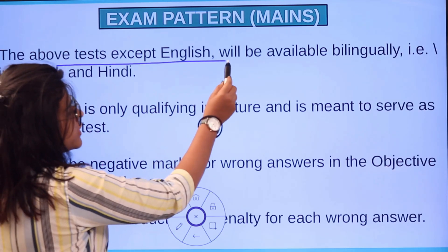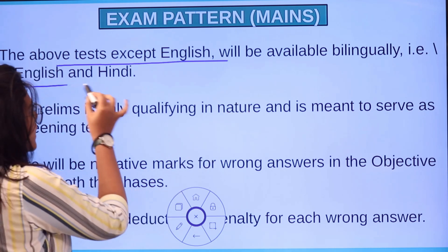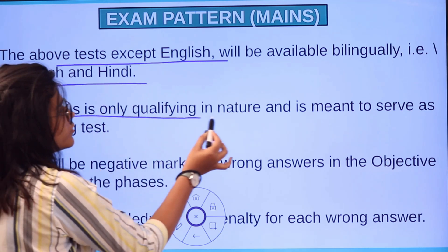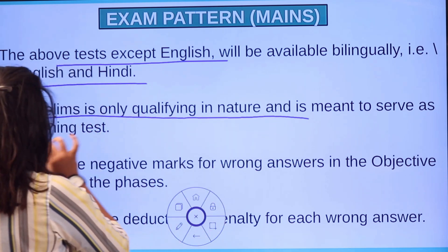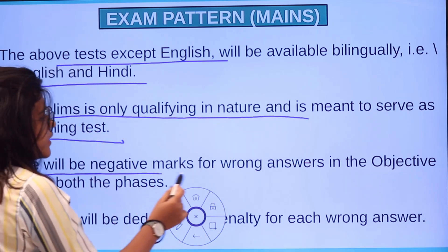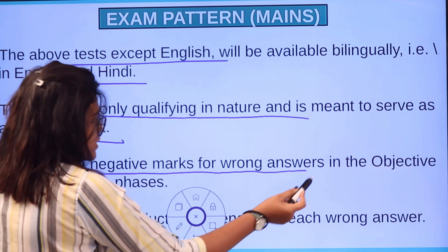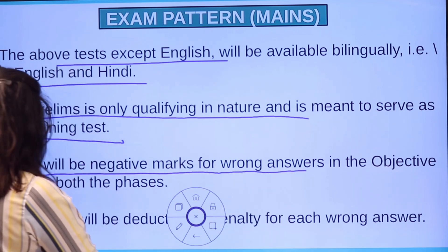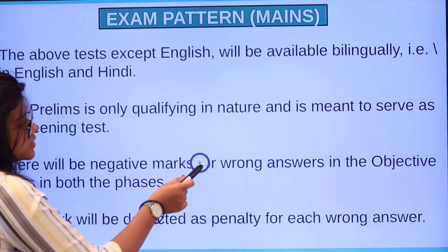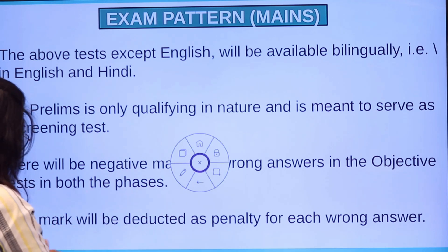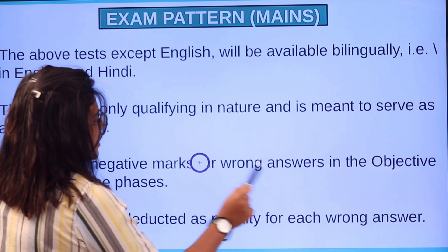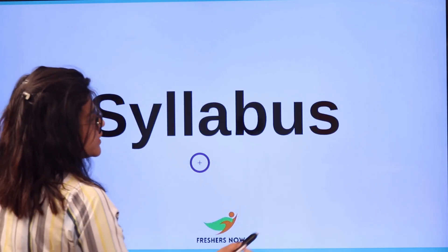Please note: all sections except English will be conducted bilingually in English and Hindi. The Prelims is qualifying in nature and serves only as a screening test. There will be negative marking for every wrong answer in the objective test in both phases — one-fourth of the marks will be deducted for every wrong answer.